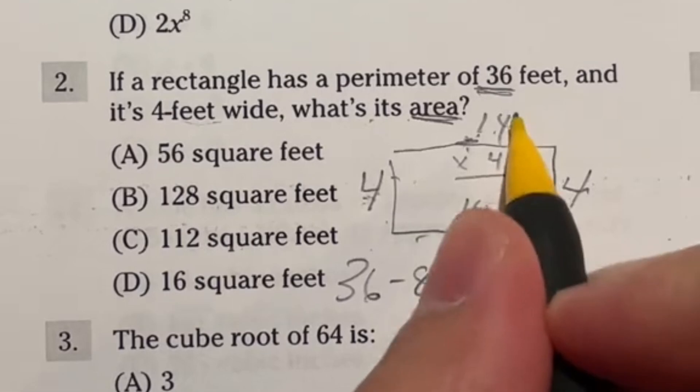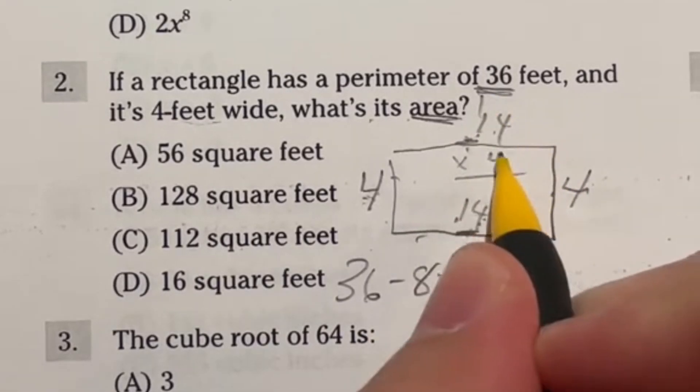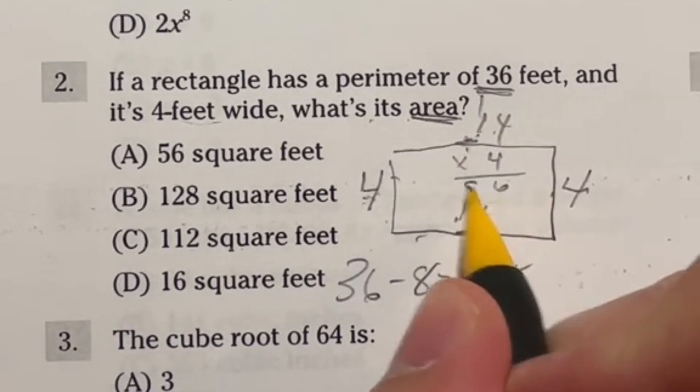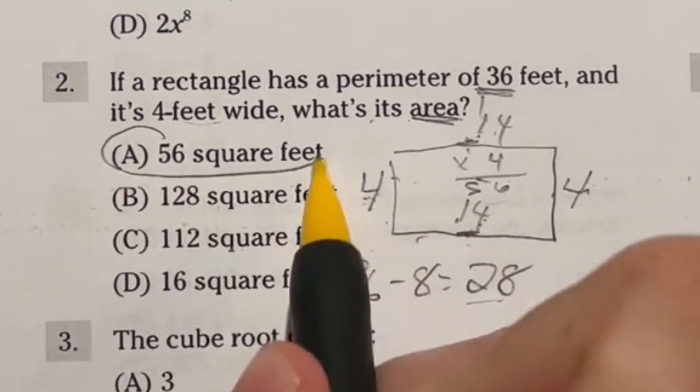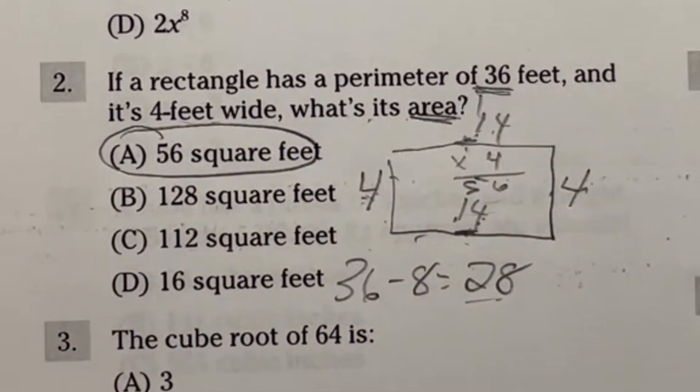So if I do four times 14, let's just do this one right here. Four times four is 16. Carry the one. Four times one is four. Plus one is five. That gives us 56. So that means our answer here should be area is 56 square feet. Answer A.